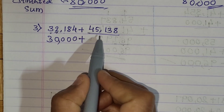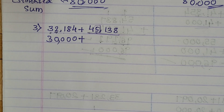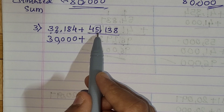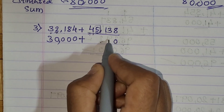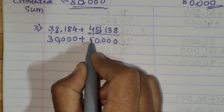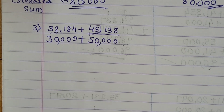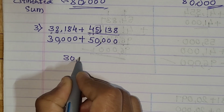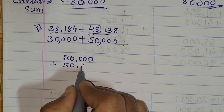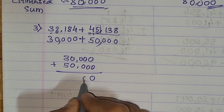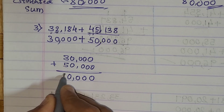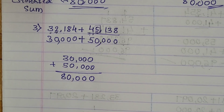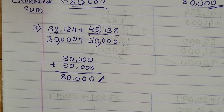Now round off the next number. See the digit at the thousand place — it is 5, which means replace unit, ten, hundred, and thousand by zero, and add 1 to the ten thousand digit. So 4 plus 1 is 5 — let's put the comma — it becomes fifty thousand. Now add: thirty thousand plus fifty thousand. 3 plus 5 is 8, so the estimated sum is eighty thousand.